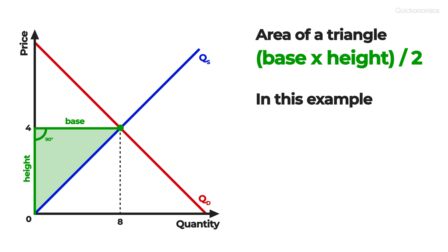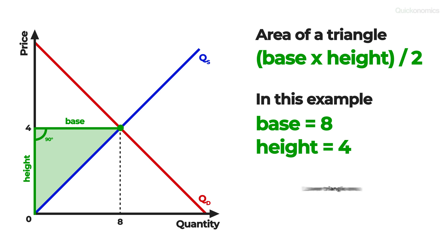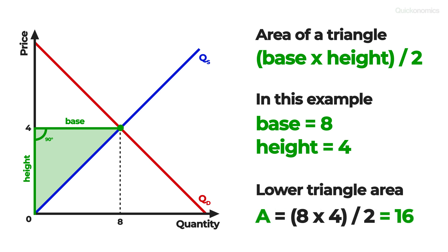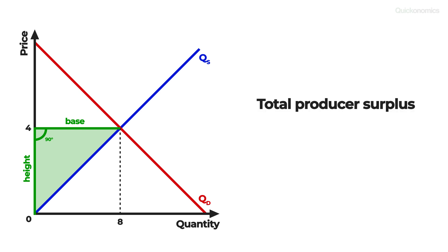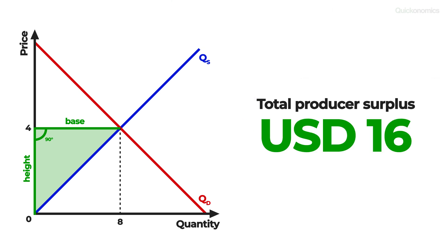In our case, the base of the triangle is 8 and its height is 4. If we plug this into the formula, we find that the area of the triangle is 8 times 4 divided by 2, which equals 16. In other words, the total producer surplus in our candy bar example is $16.